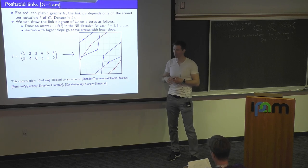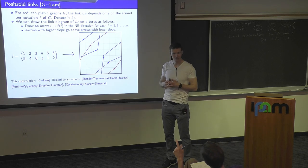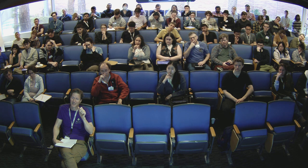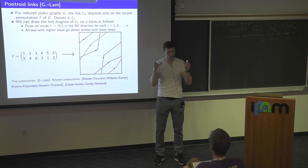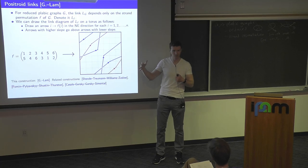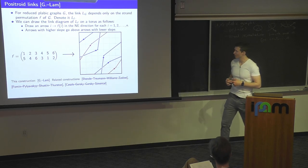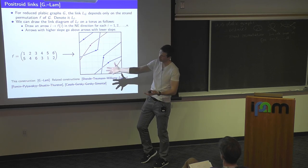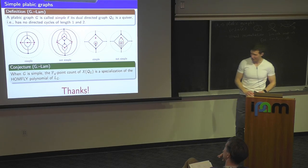Thomas and I proved that this construction gives the same result as the previous slide for reduced plebik graphs. You can study the homology of these knots, and it turns out to be related to the homology of the cluster varieties I talked about before. I'll stop here — thank you.